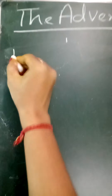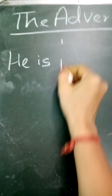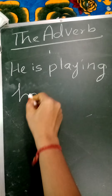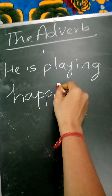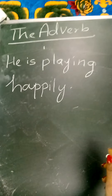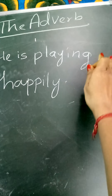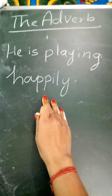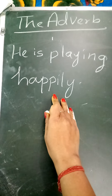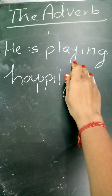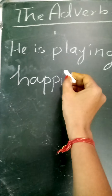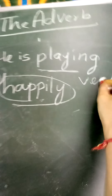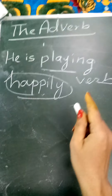Look at the example. He is playing happily. Ab, yaha pere he is playing — woh khel raha hai. How? Happily. So, he is playing happily. Yani, 'happily' jo word hai woh kis action ko describe kar raha hai? Play ko, yani verb ko describe kar raha hai. Toh, yaha pere adverb kya hai? Happily. Aur kis ko describe kar raha hai? Play, yani verb ko.